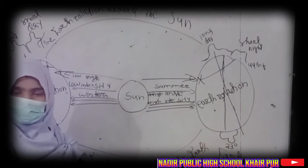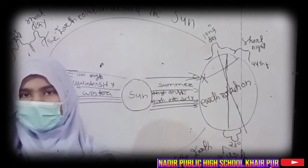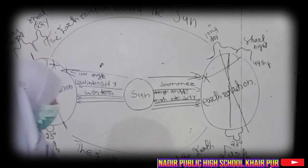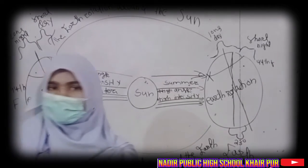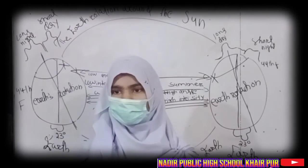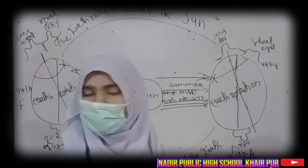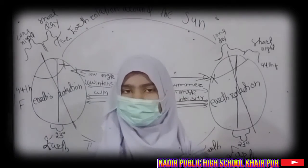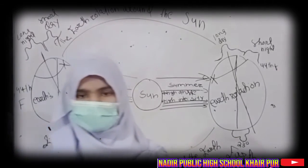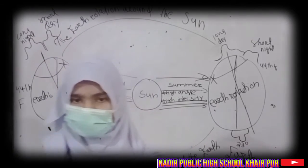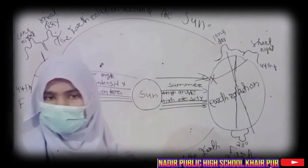Assalamu alaykum, my name is Alisha and today my topic is revolution. The earth revolves around the sun — this is called revolution. The earth completes its revolution in one year. We ignore six hours each year, and save those six hours every four years. Every fourth year we add one extra day in February, making it 29 days instead of 28 — such a year is called a leap year.